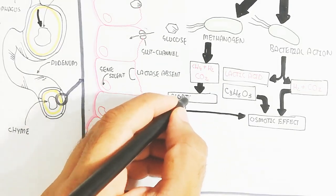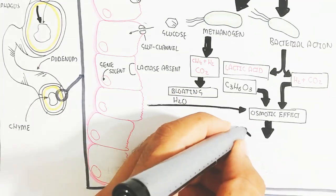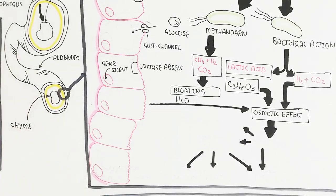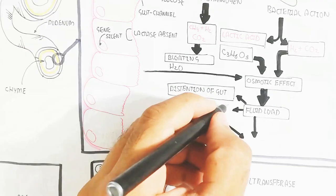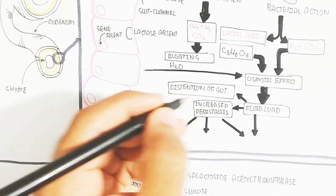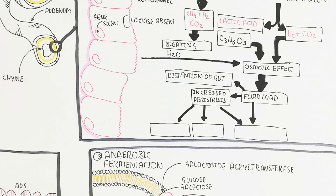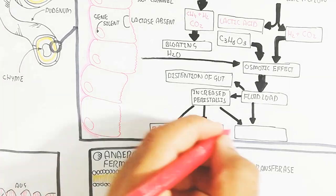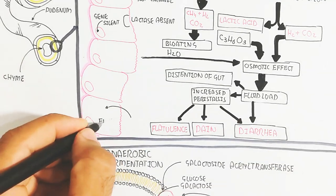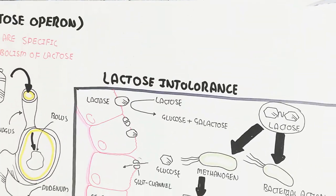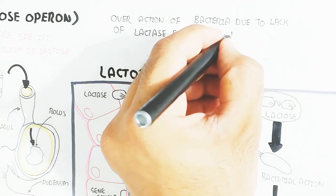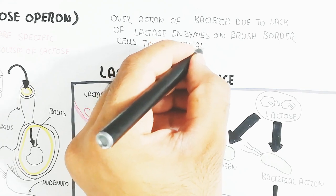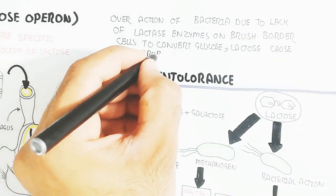The gas and lactic acid cause an osmotic effect, drawing water from the circulatory system and enterocytes into the lumen of the digestive system. Increased water volume causes gut distension due to fluid load, which increases peristalsis due to stretching of the large intestine wall. This fluid load causes diarrhea, increased peristalsis leads to pain and flatulence, and enterocytes may be damaged. In summary, the overaction of bacteria due to the absence of brush border lactase causes lactose intolerance.